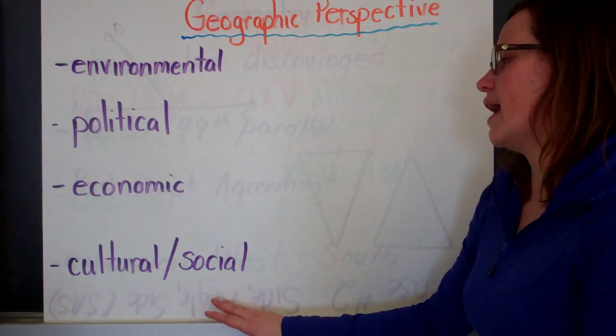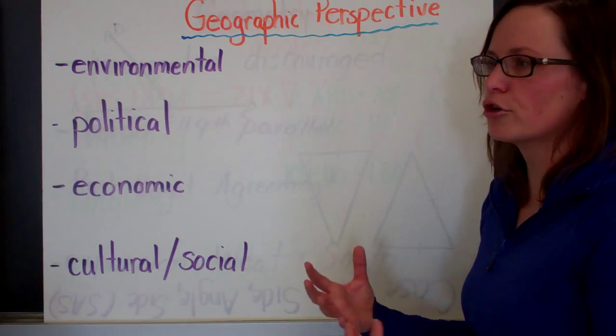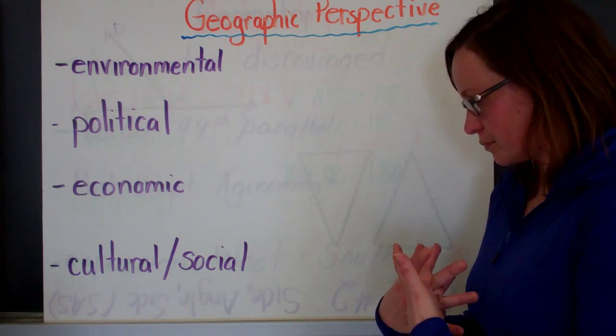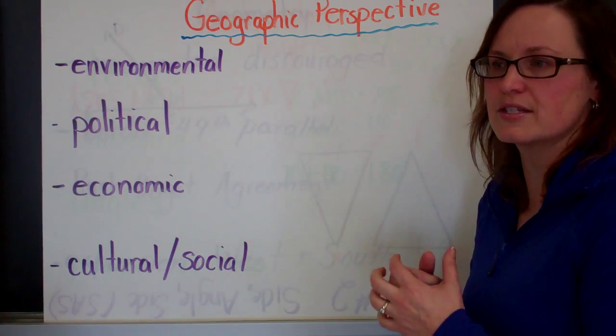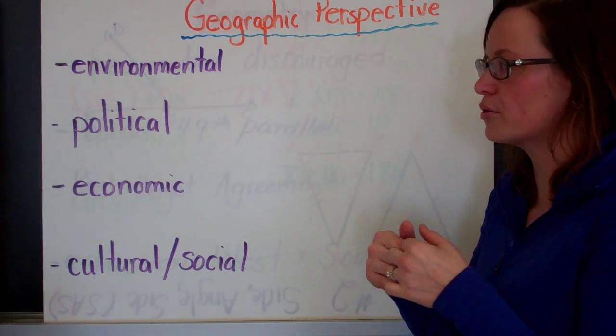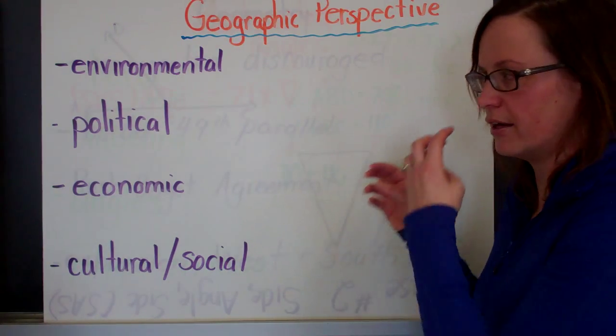And then the cultural and social perspective. Are there two groups that have opposite points of view for religious reasons or cultural beliefs? And how are you going to work through those when you're making decisions about a region that they both live in?